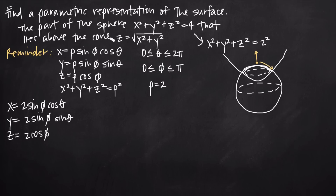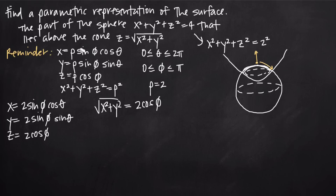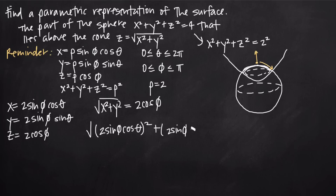To find the new interval for phi, we take the cone equation z equals square root of x squared plus y squared, and the parametric equation for z on the sphere, and set them equal: square root of x squared plus y squared equals 2 cosine of phi. We substitute our parametric equations for x and y, giving us the square root of the quantity (2 sine phi cosine theta) squared plus (2 sine phi sine theta) squared, equal to 2 cosine of phi.